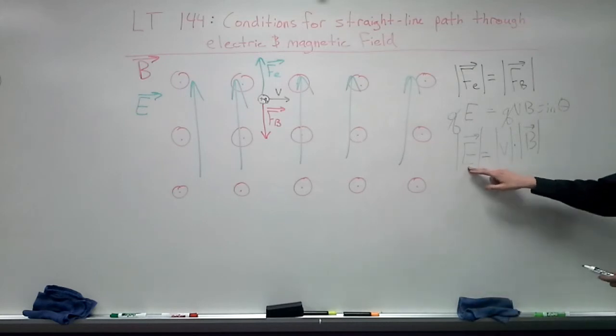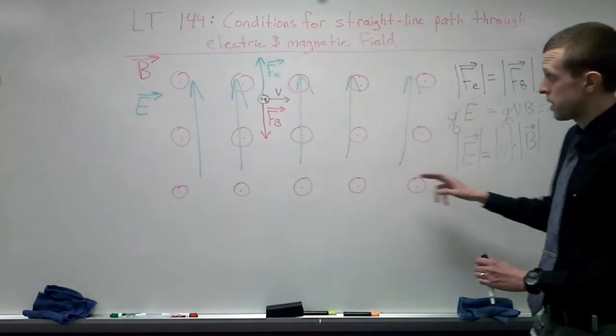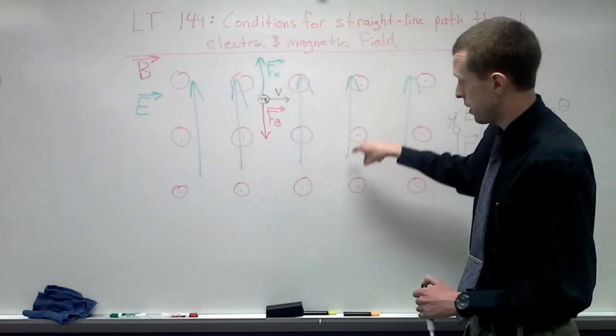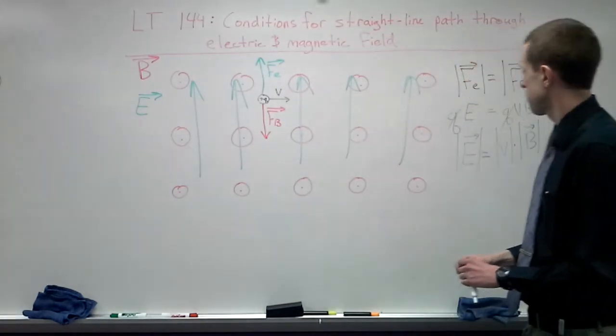So this is the strength of the electric field that we would need in order to keep this particle from curving and following this circular path.